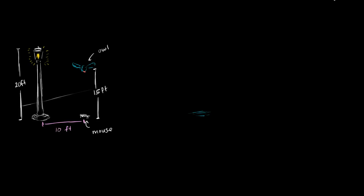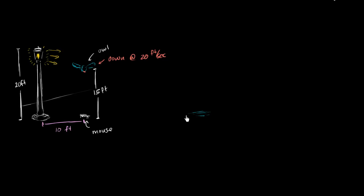We have our radar gun out. We know the owl is diving straight down, and right now it is going 20 feet per second, straight down. Light is coming from the street lamp in every direction, and it creates a shadow of the owl. As the owl goes further and further down, the shadow is going to move to the left. The question is: at what rate is the shadow moving?